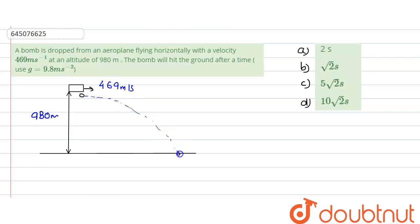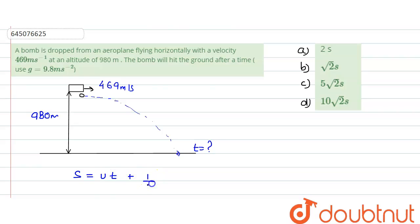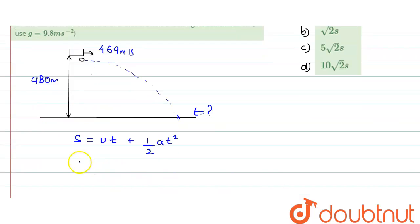The bomb follows a projectile path and finally drops to the ground. Now, what is the time it would take? The 980 meters is the displacement in the y-direction. Using the equation of motion: s = ut + ½at². In the x-direction there is no force, so we only need to consider the y-direction to calculate the time.